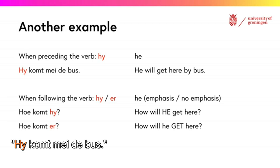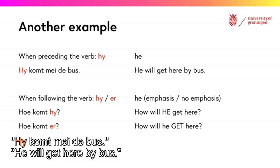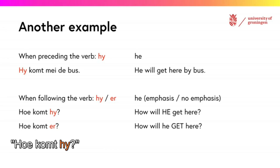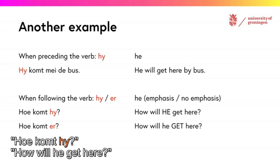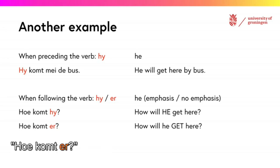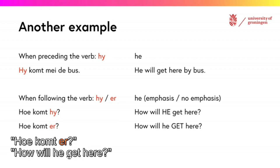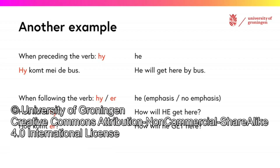'Hij komt mij de bus' — he will get here by bus. 'Hoe komt hij?' — how will he get here? 'Hoe komt er?' — how will he get here? 'Hoe komt hij?' — how will he get here?